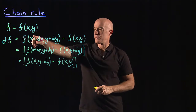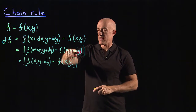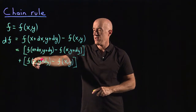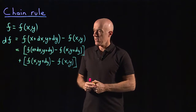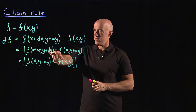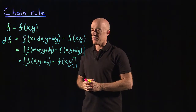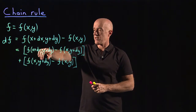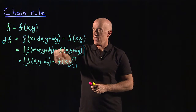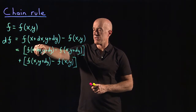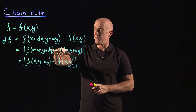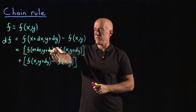It's the same expression — the minus f of x, y plus dy cancels the plus f of x, y plus dy. These look like partial derivatives. The definition of the partial derivative is that you hold y fixed, and then take the limit of f of x plus h minus f of x. This is the same formula, except holding y fixed at y plus dy.